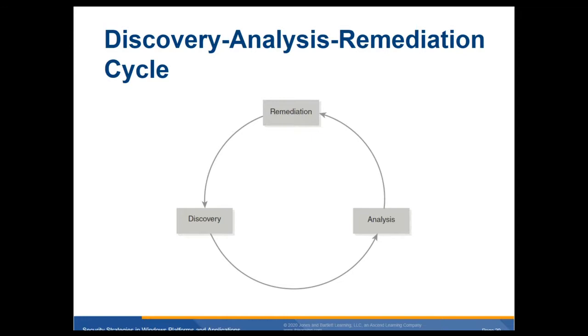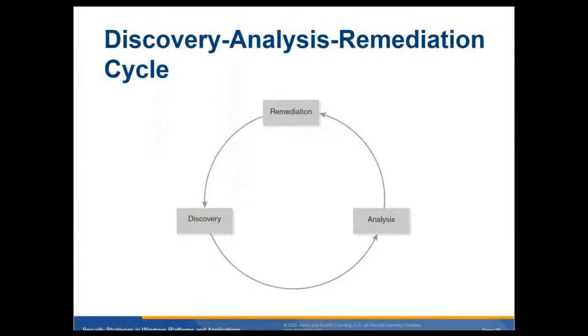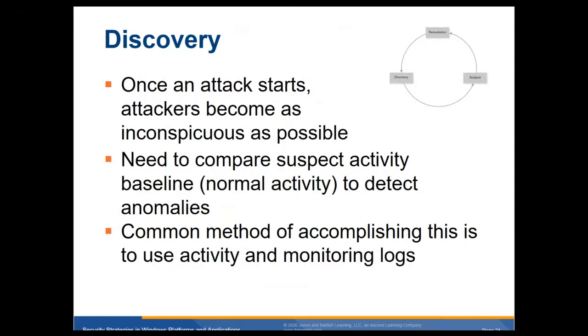The discovery and remediation cycle: discover a vulnerability, analyze it, then fix it — and it keeps going on and on because threats will never go away. Nothing will ever be 100% secure. Once an attack starts, attackers become as inconspicuous as possible. You need to compare suspected activity to a baseline of normal activity to detect anomalies. Have a baseline of your client and server machines — do a sampling — and see what normal activities are and compare to when an attack is going on. A common method is to use activity and monitoring logs.